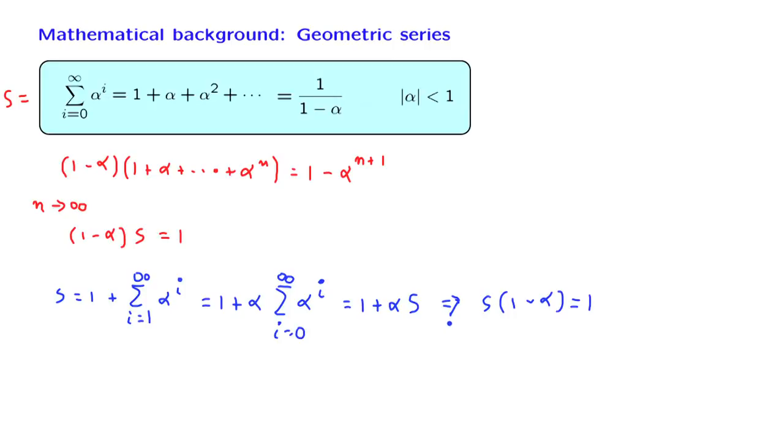However, there is one word of caution. In this step, we subtracted alpha s from both sides of the equation. And in order to do that, this is only possible if we take for granted that s is a finite number. So this is taken for granted in order to carry out this derivation.